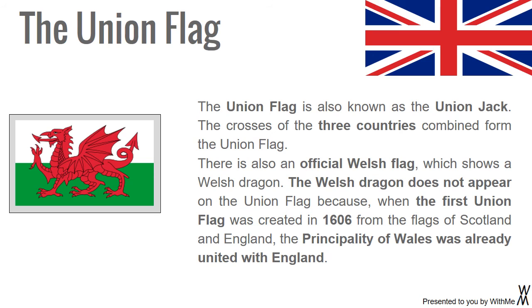The Union Flag is also known as the Union Jack. The crosses of the three countries combined form the Union Flag. There is also an official Welsh Flag which shows a Welsh Dragon. The Welsh Dragon does not appear on the Union Flag because, when the first Union Flag was created in 1606 from the flags of Scotland and England, the Principality of Wales was already united with England.